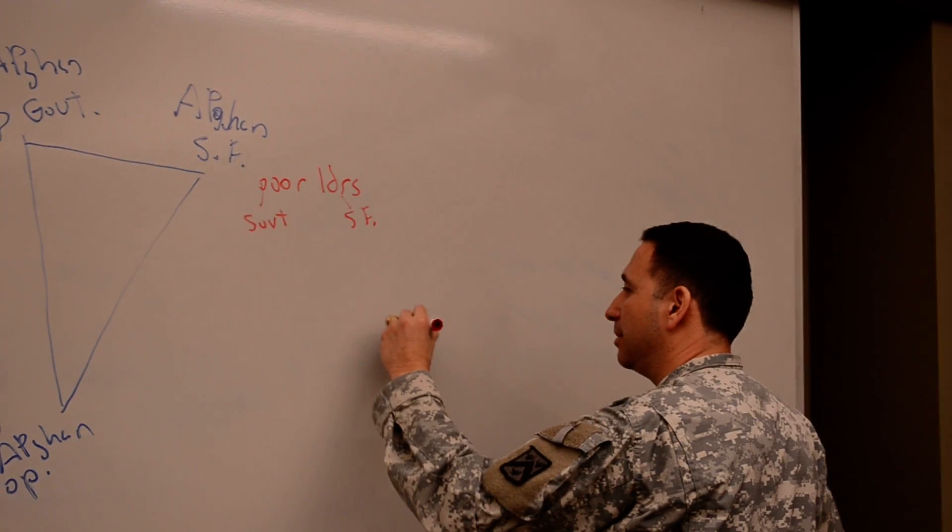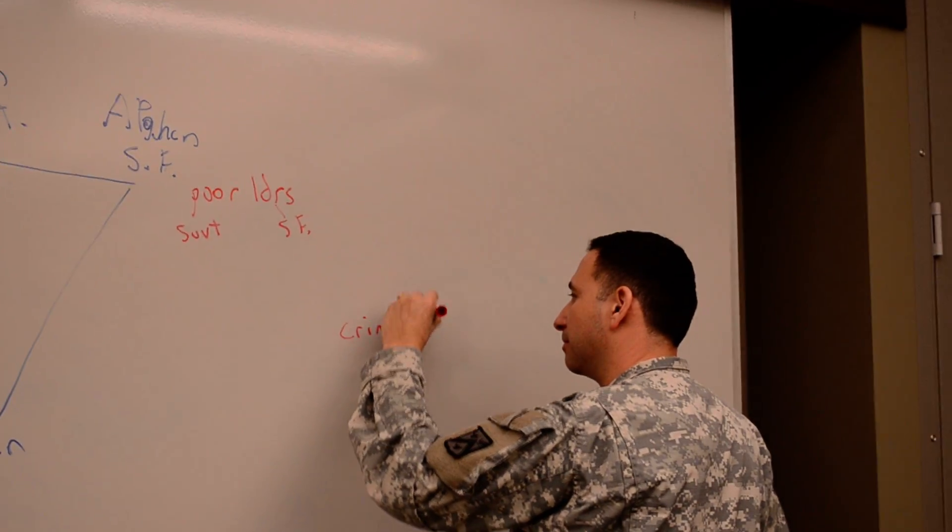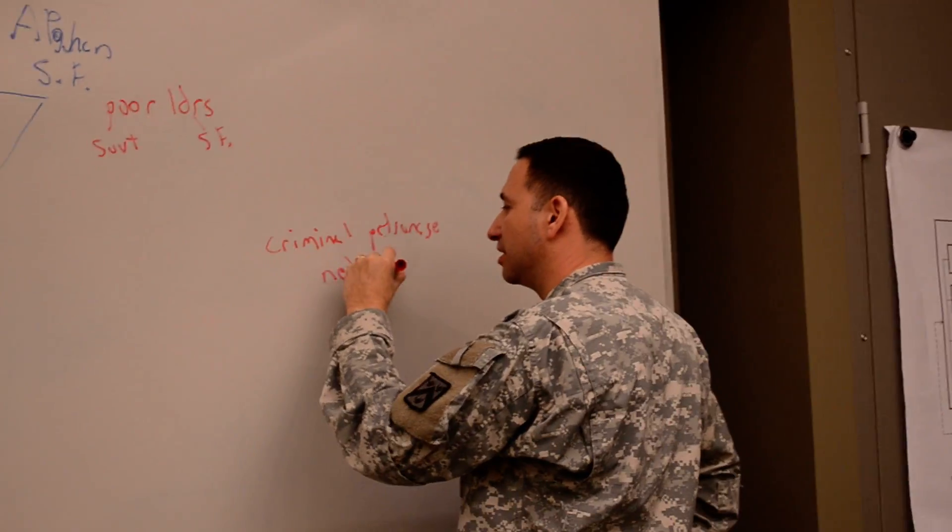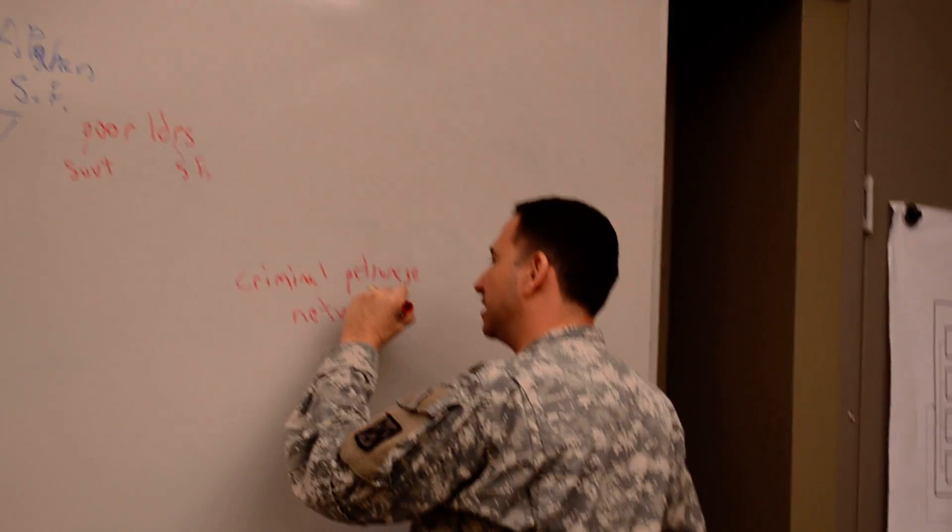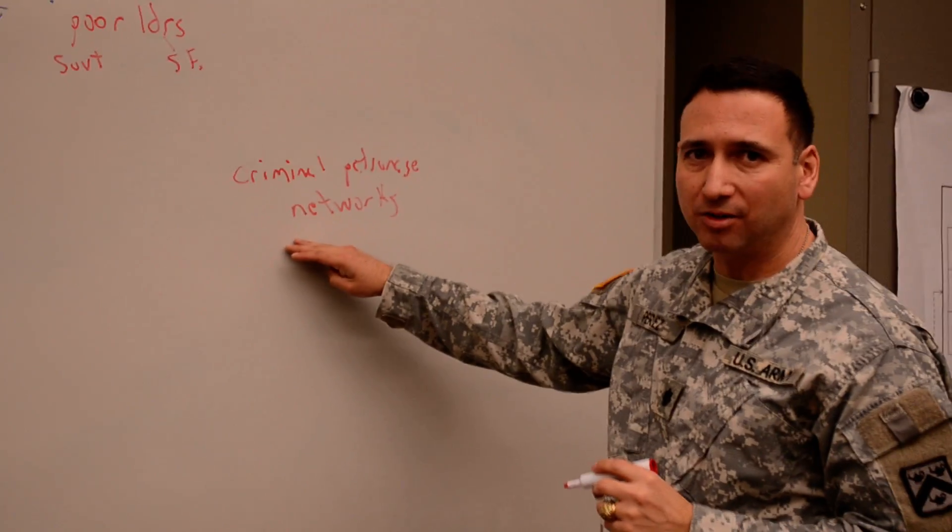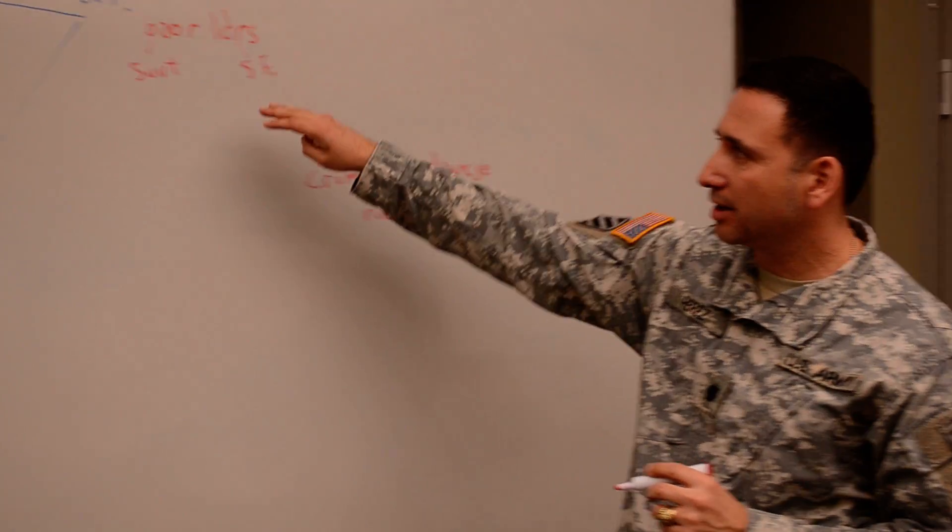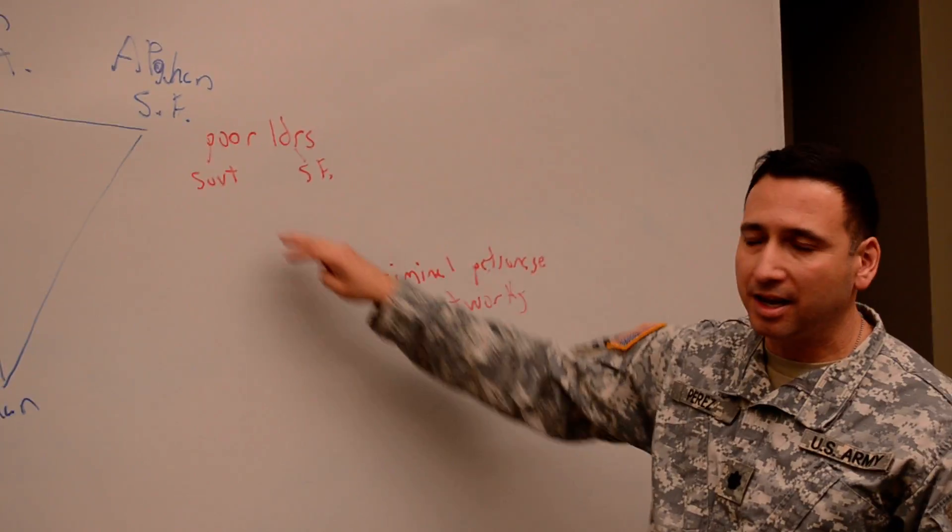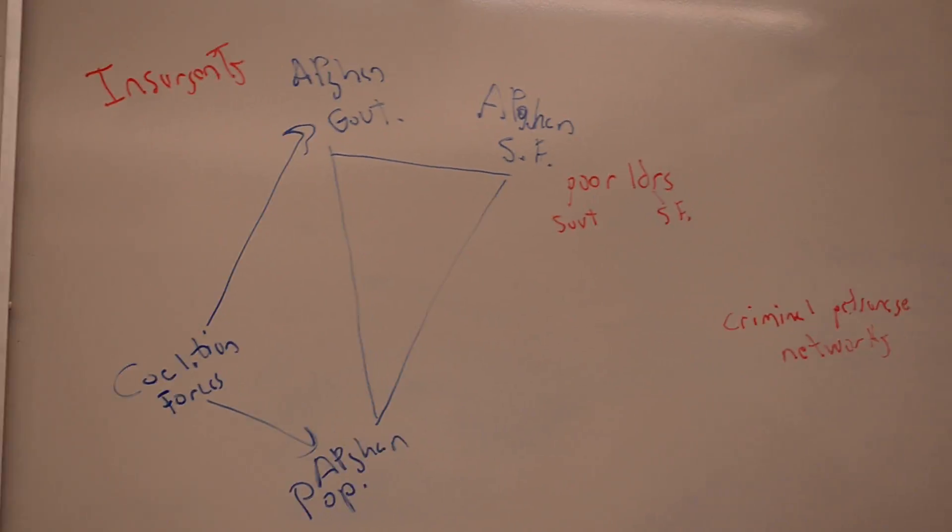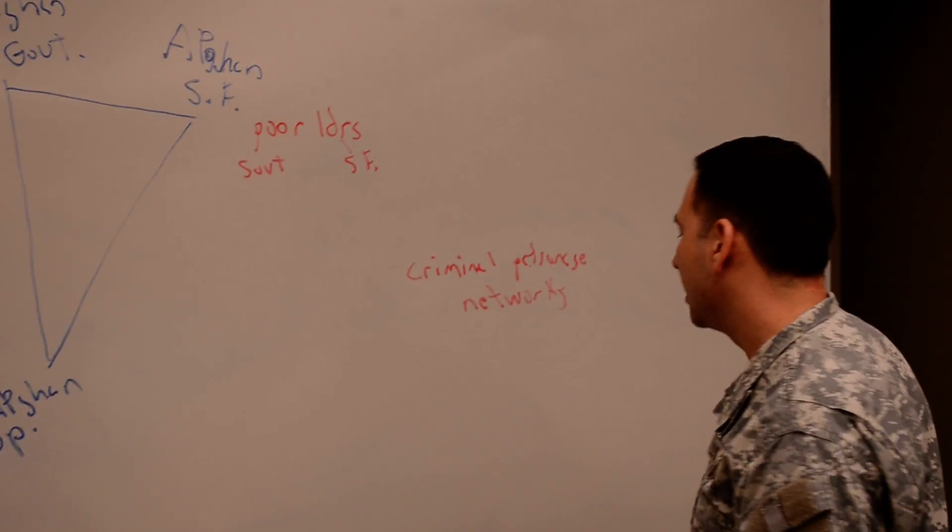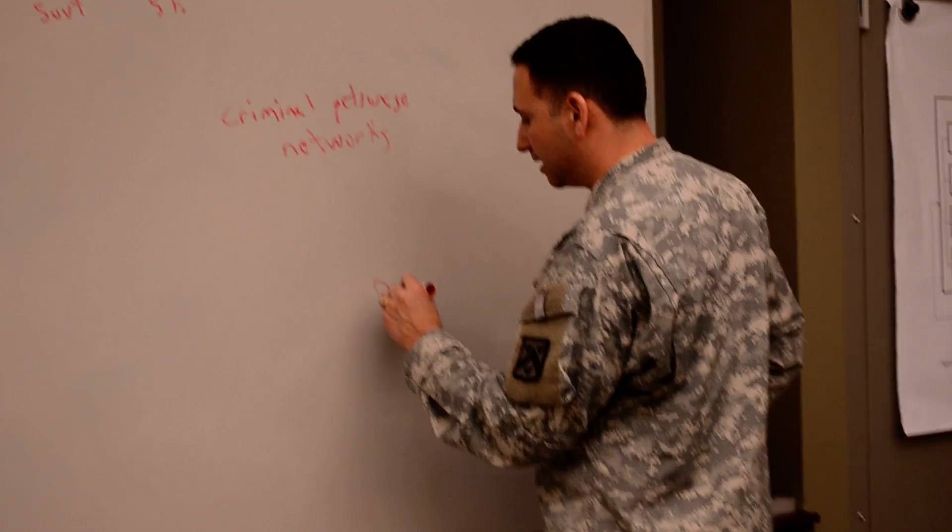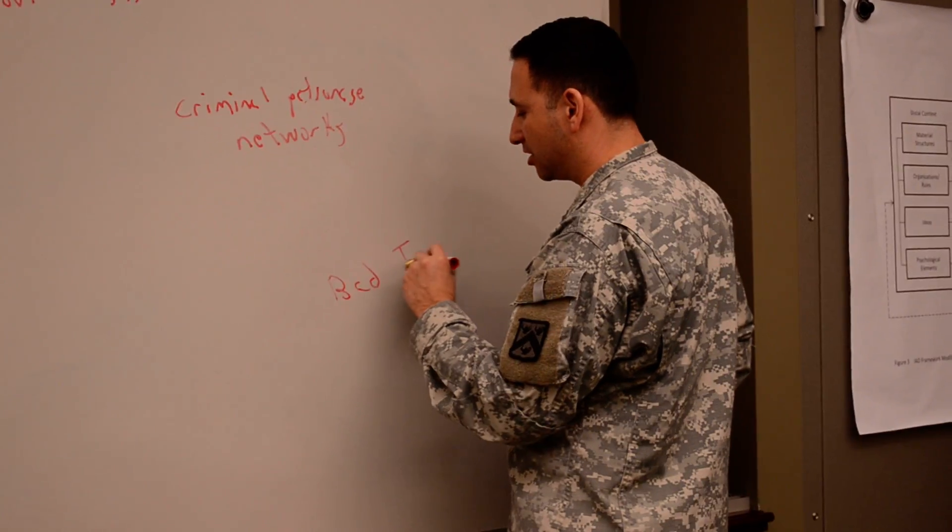There was another enemy. Criminal patronage networks, CPNs. You can think of these, and General Rodriguez thought of these, as simply mafia organizations. They also preyed upon the population, and were conveniently collaborating with the insurgents in working against the Afghan government. And then finally, the fourth enemy of the Afghan people are bad international practices.